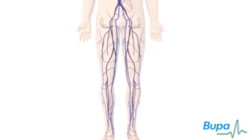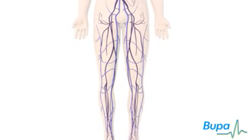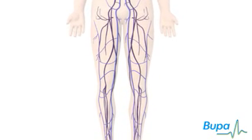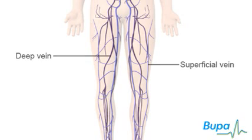The deep veins pass through the deep tissues of the leg and transport blood from the legs and feet back up to the heart. The superficial veins lie below the surface of the skin. Here we show the position of the leg veins.